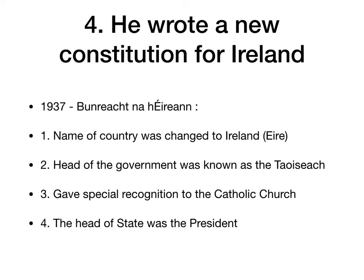He then wrote his own constitution, known as Bunreacht na hÉireann. There were a few striking provisions within it. He changed the name of the country from the Irish Free State to Ireland or Éire. He had the head of government be known as the Taoiseach. He gave special recognition to the Catholic Church — there were really only three people involved in drafting the constitution, one of them being Archbishop McQuaid, a very powerful figure in Irish politics who had a big influence. Things like no divorce were included. The head of state was to be the President — Uachtarán — and Douglas Hyde was elected as the first President of Ireland.